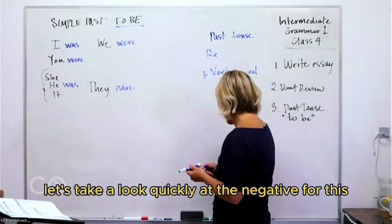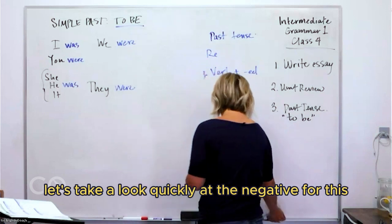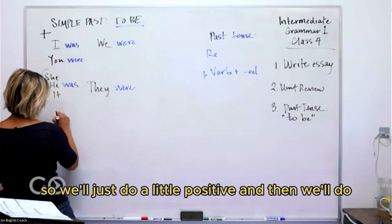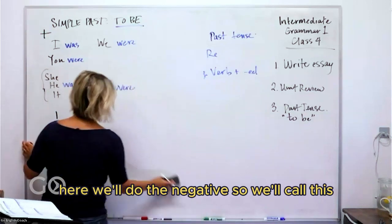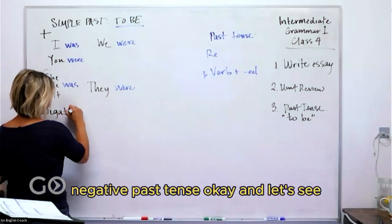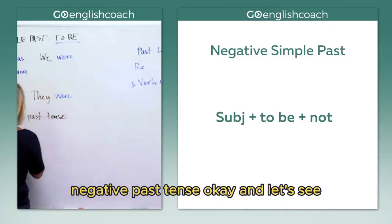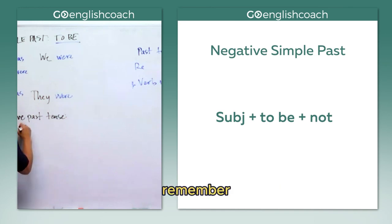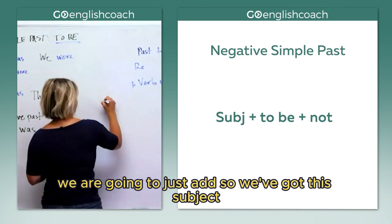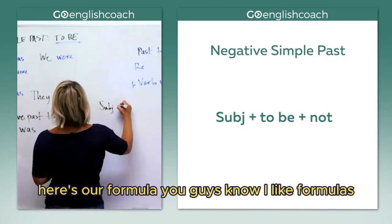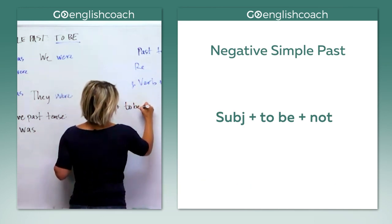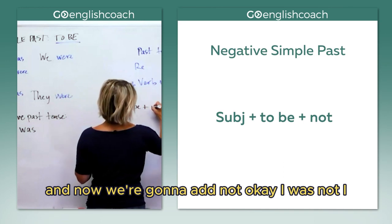Alright, let's take a look quickly at the negative for this. So this is affirmative. We'll just do a little positive and then we'll do here, we'll do the negative. So we'll call this negative past tense. And remember we are going to just add - so we've got this subject, here's our formula, you guys know I like formulas - we've got the form of 'to be' and now we're going to add 'not'.